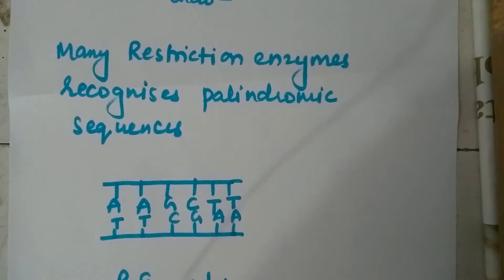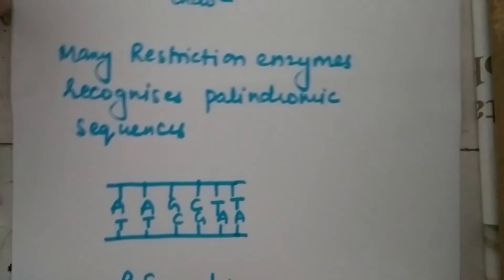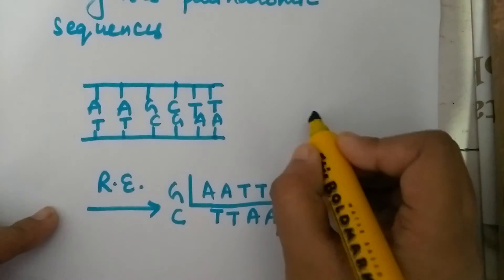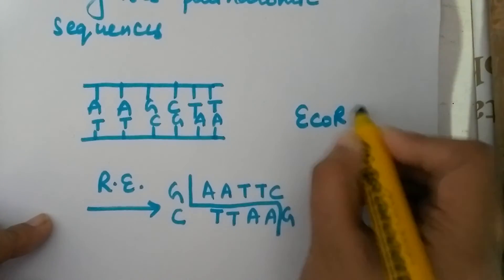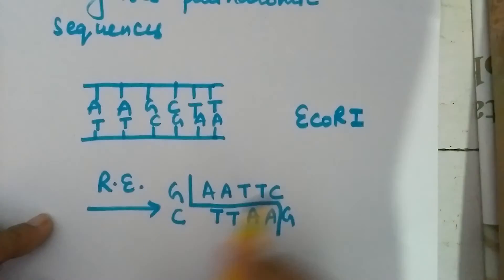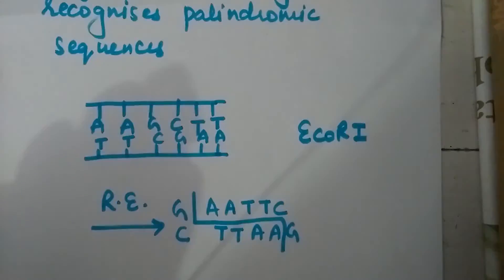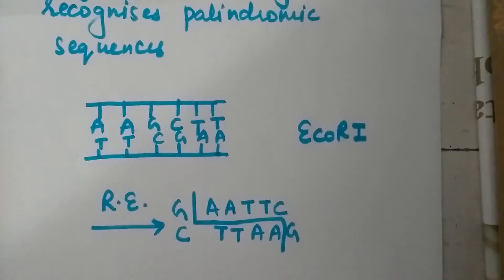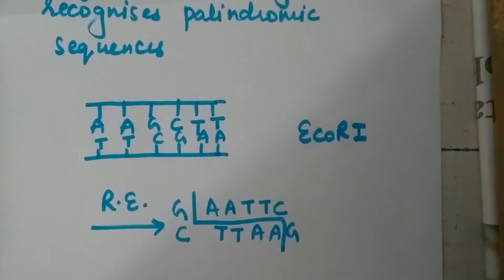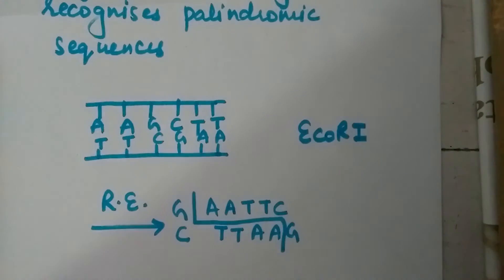If we take the example of EcoRI digestion, it produces sticky ends. Sticky ends are named so because they form hydrogen bonds with their complementary cut counterparts, and this stickiness of the ends facilitates the action of the enzyme known as DNA ligase.